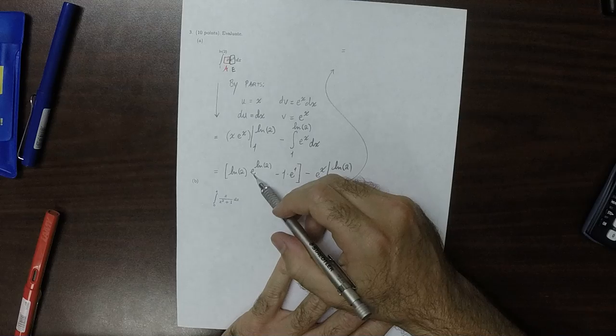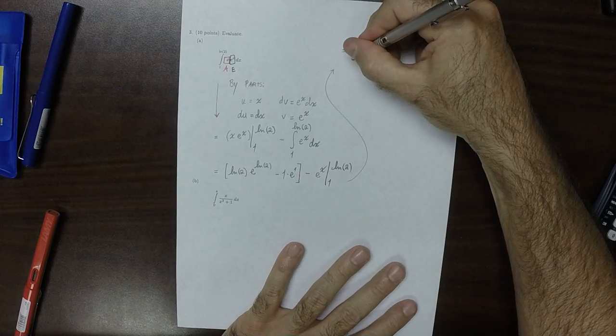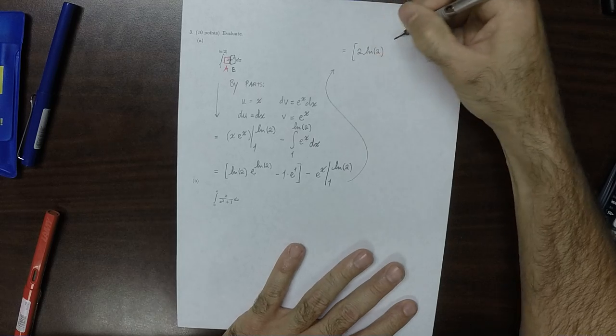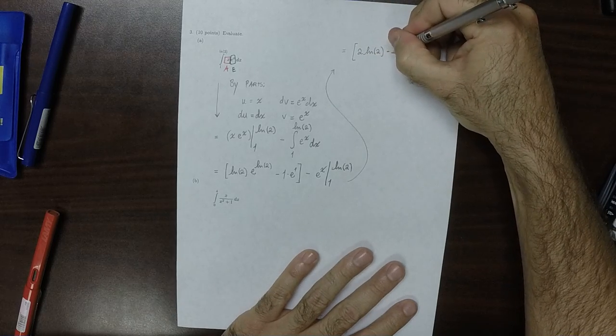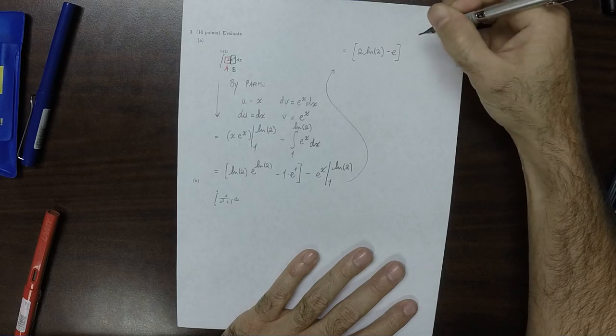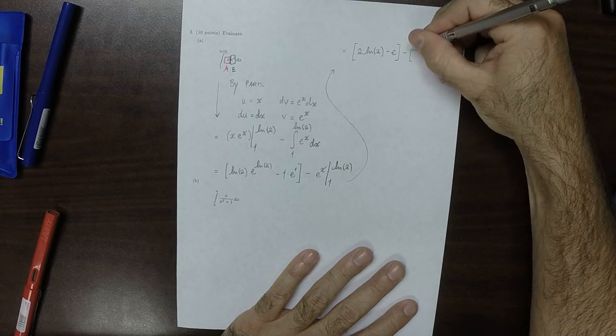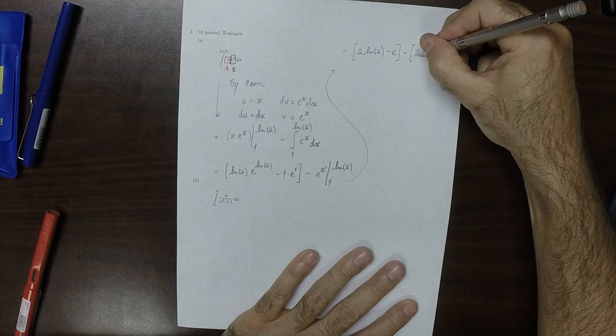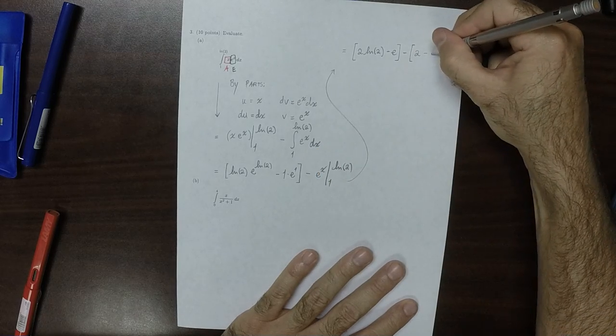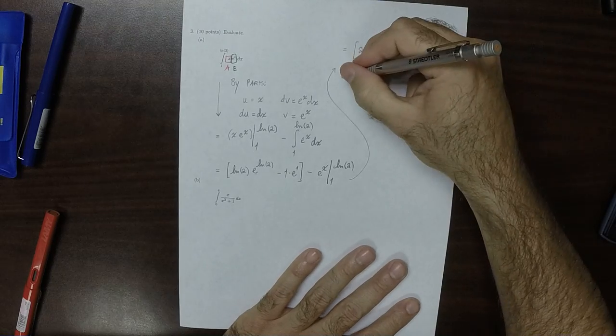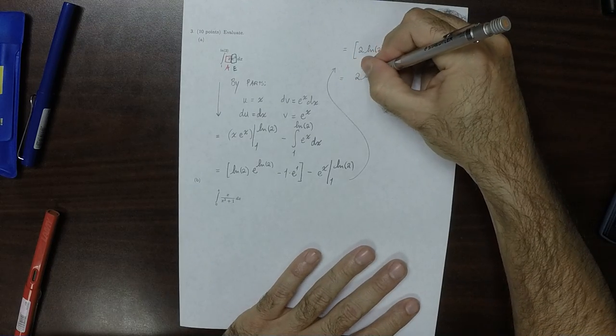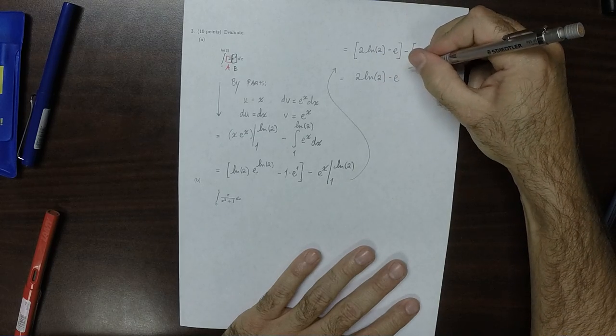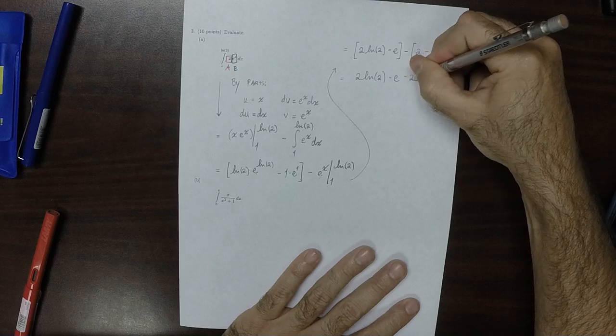Well, the exponential of the log of 2 is just 2, so this is 2 log 2 minus e, and then minus, again, exponential of log of 2 is 2 and then minus e. Distribute that, so that's 2 log 2 minus e minus 2 plus e.